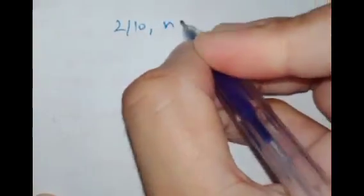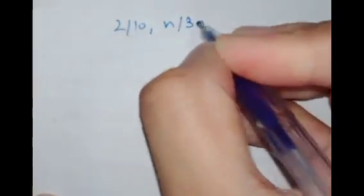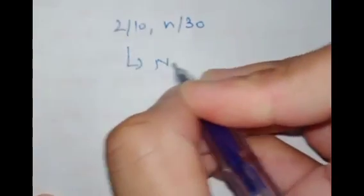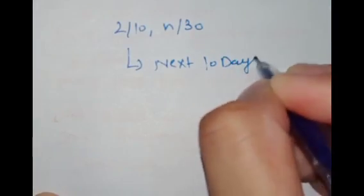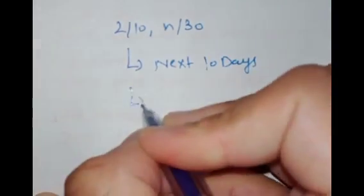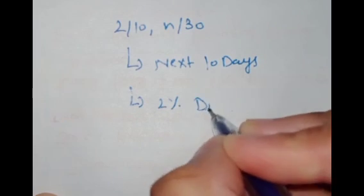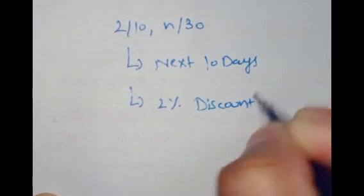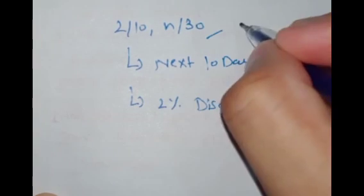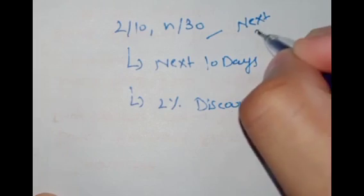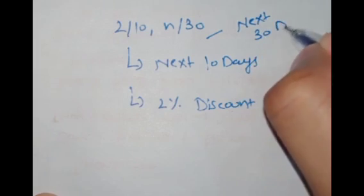First of all, understand this statement: 2/10, n/30. It means if the buyer makes the payment within the next 10 days, he will be entitled for 2% discount. Otherwise, the amount is due in full within 30 days.